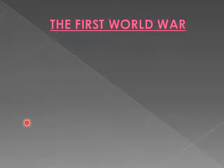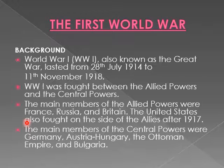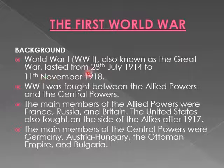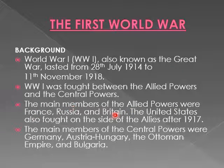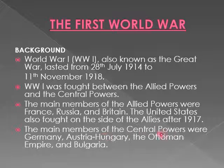World War 1, also known as the Great War, lasted from 28th July 1914 to 11th November 1918. It was fought between the Allied Powers and the Central Powers. The main members of the Allied Powers were France, Russia, and Britain. The United States also fought on the side of the Allies after 1917. The main members of the Central Powers were Germany, Austria-Hungary, the Ottoman Empire, and Bulgaria.